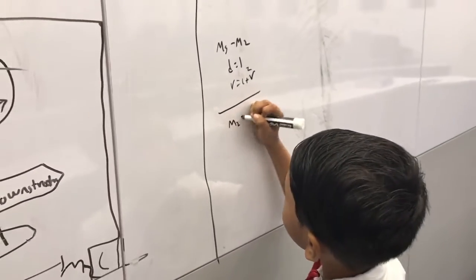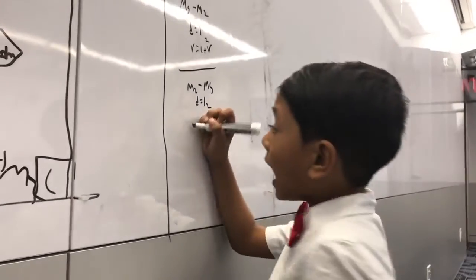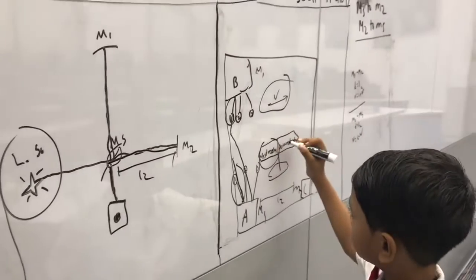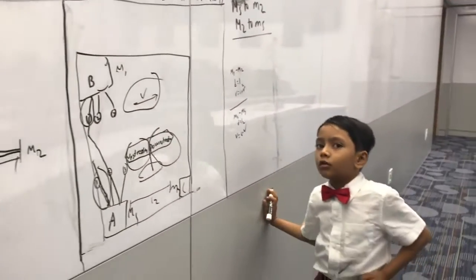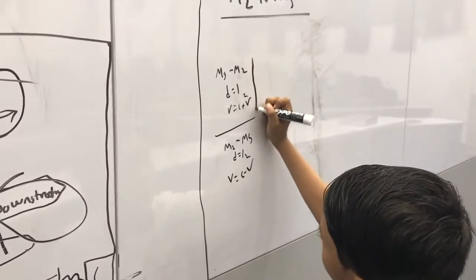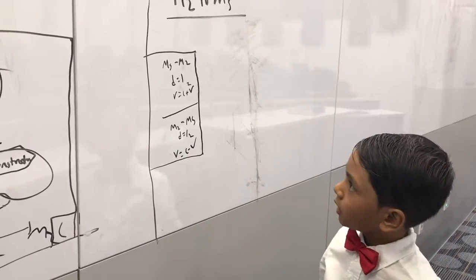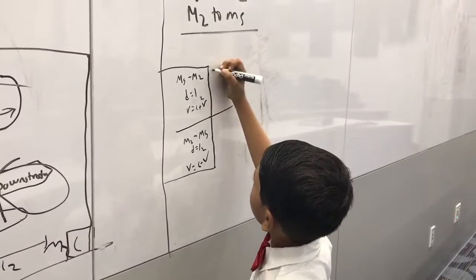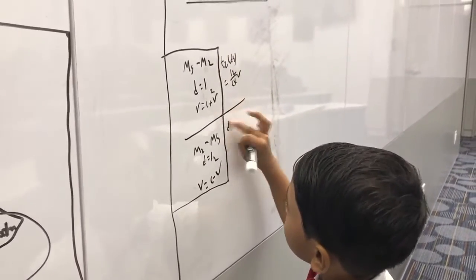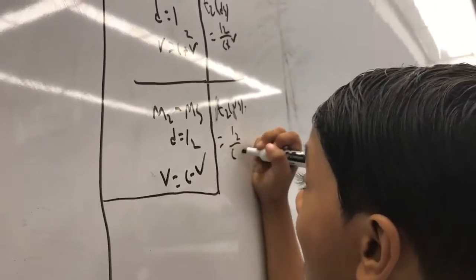But M2 to MS changes the velocity. The distance is still L2 because the length is the same, but look out — now the velocity is C minus V, because you're going upstream, not downstream. So the ether will slow you down. Also, we're using C because that's the maximum speed you can go. So, T2 downstream is L2 over (C plus V), and T2 upstream is L2 over (C minus V).